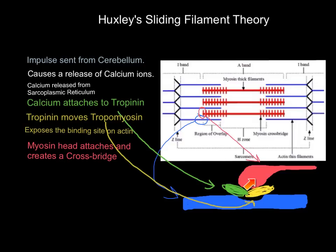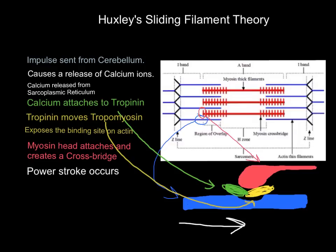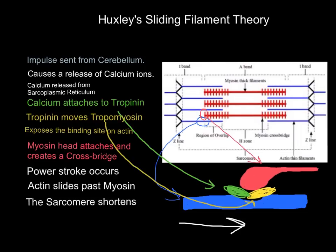With the myosin head in the binding site, the actin filament slides inward. We want that Z line to move inwards, shortening the sarcomere — and that is what we call a power stroke.